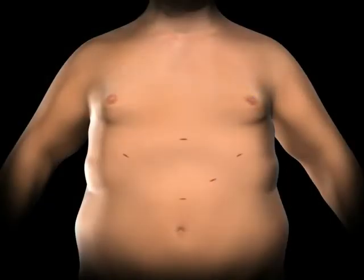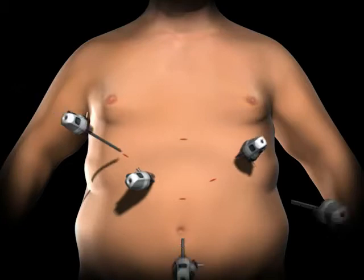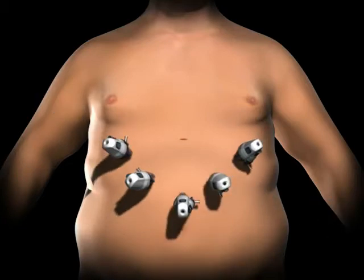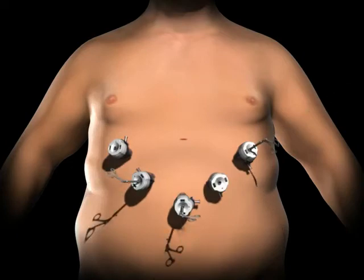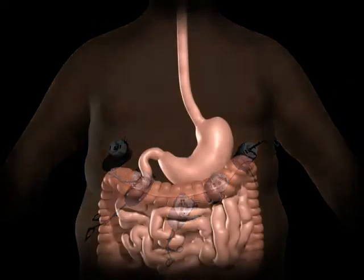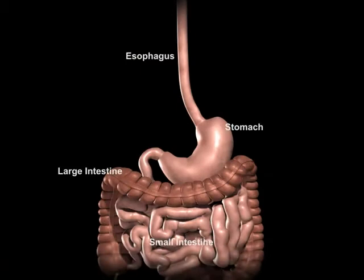To gain access to the abdominal cavity, small incisions are created on the abdomen. Trocars, which serve as passageways for the surgical instruments, are placed into the incisions. The surgeon examines the abdominal cavity using a laparoscope or video camera.